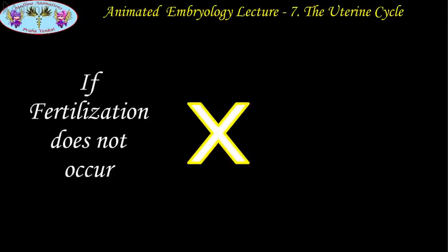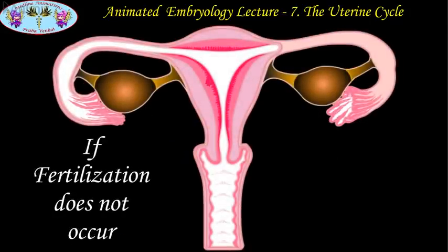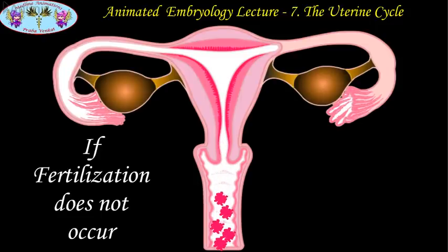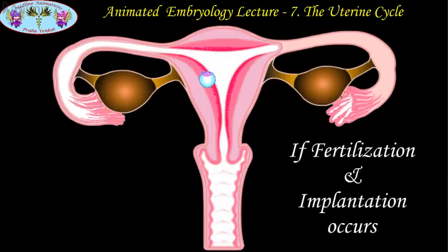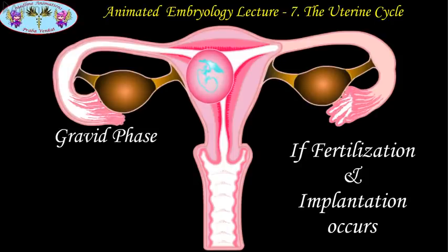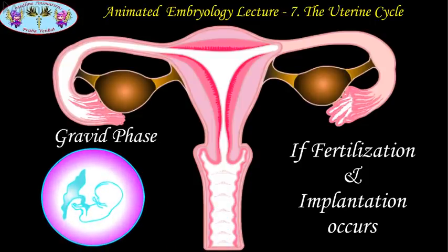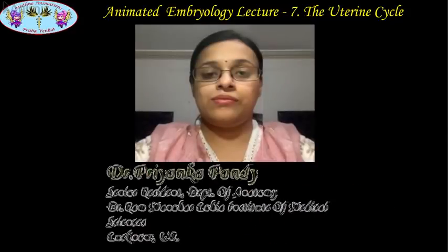There are two possibilities: if fertilization does not occur, the secretory phase is followed by the ischemic phase and the menstrual phase; the functional layer of the endometrium is discarded and the next cycle starts with the help of the basal cell layer. But if fertilization and implantation occur, the uterine cycle progresses into the gravid phase, which carries the embryo for the next 266 days and expels the fetus at parturition or delivery. This concludes the uterine cycle.